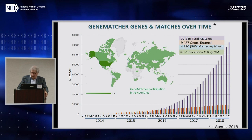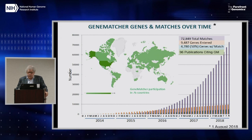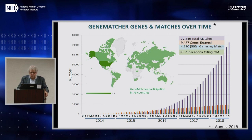Here are the data as of August 1st: there were 72,849 total matches, and 9,487 genes were entered. About half of those genes have been matched, and so far there are 96 publications citing the value of GeneMatcher and catalyzing the ability to find a new family. It's turning out to be very popular, used around the world, and seems to be getting more and more valuable as time goes on.